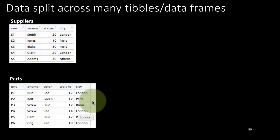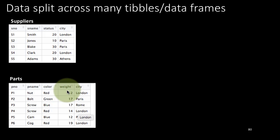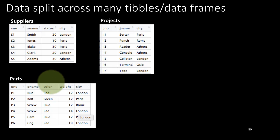Similarly, we have another table called parts. We've got the part number — there are six parts in this example — part name (PName), color which is the color of the part, the weight of the part, and the city in which the part is located. And again we have another table called projects.